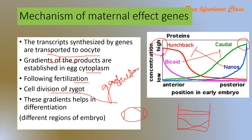This is the mRNA distribution graph. Looking at the mRNA concentration, hunchback and bicoid proteins are seen across the embryo, with bicoid high in the anterior position and nanos high in the posterior position. In the protein graph, hunchback and bicoid are high in the anterior and caudal and nanos proteins are high in the posterior. Bicoid mRNA is concentrated anteriorly and nanos mRNA is concentrated posteriorly.